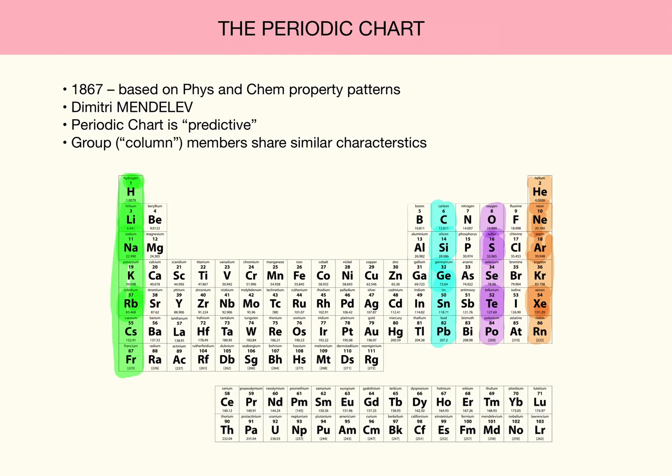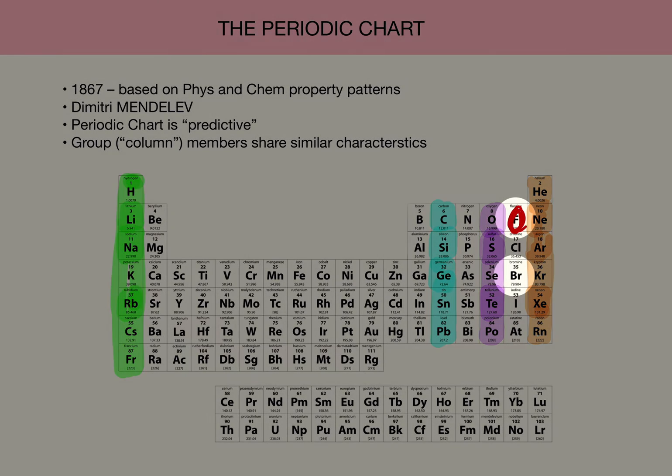Now one of the magical things about the Periodic Chart is it now becomes predictive. If one looks down any column, all of the elements below that will share similar properties. In other words,